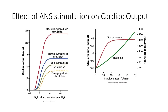A graph shows what happens with sympathetic stimulation: at a given right atrial pressure, maximal sympathetic stimulation causes cardiac output to skyrocket, while parasympathetic stimulation reduces it. This illustrates why we see higher heart rates during exercise — the sympathetic nervous system is favored, producing a higher cardiac output so we can respond to external threats.